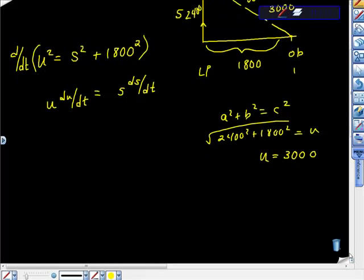They're asking what's the rate of change. What we really want is du/dt. Now that we have some information, we can start filling in blanks. When U is 3000 feet, then S is 2400 feet. We have kind of two variables, and we need to get rid of ds/dt.